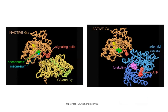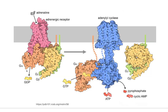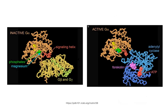So the primary messenger — the hormone — is going to bind to the receptor and cause the receptor to change shape. The change-shaped receptor is then going to cause the G-protein to change shape, releasing its GDP and taking up GTP.